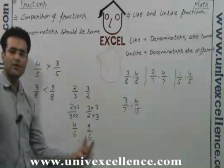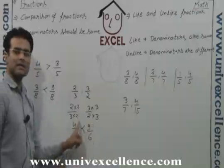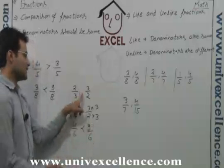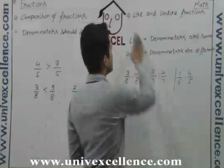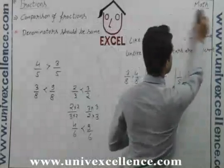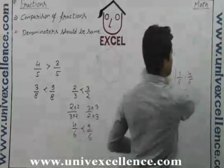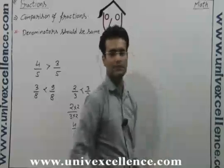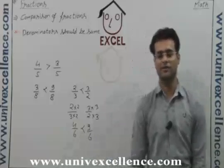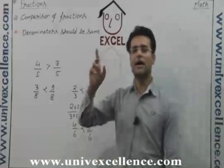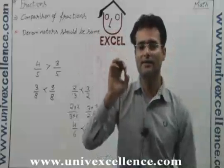Now denominators are same. You can check which is the larger one. If 9 by 6 is larger than 4 by 6, it means 3 by 2 is larger than 2 by 3. So just make the denominator same. It means make the like fractions and only like fractions can be compared. You can compare only like fractions. You cannot compare unlike fractions. First, convert the unlike fractions into like fractions and then compare.